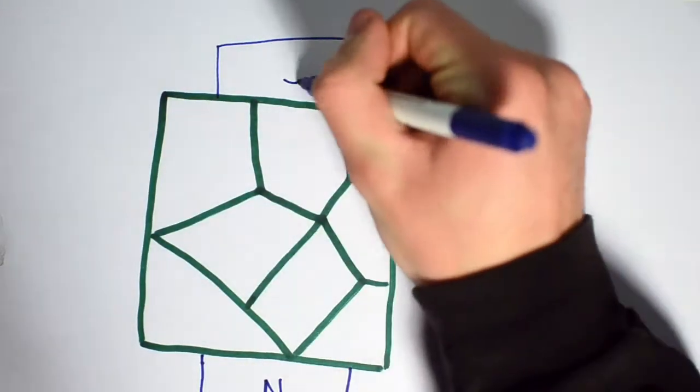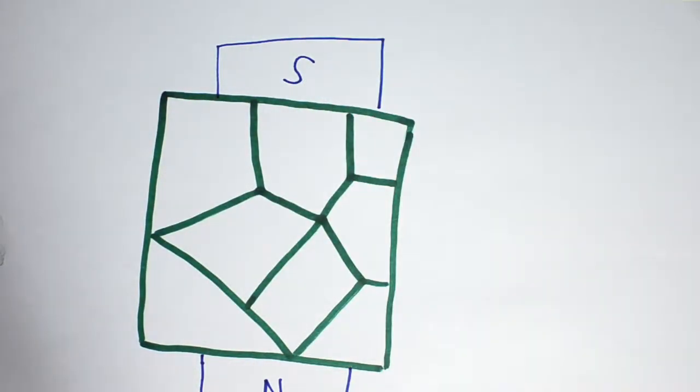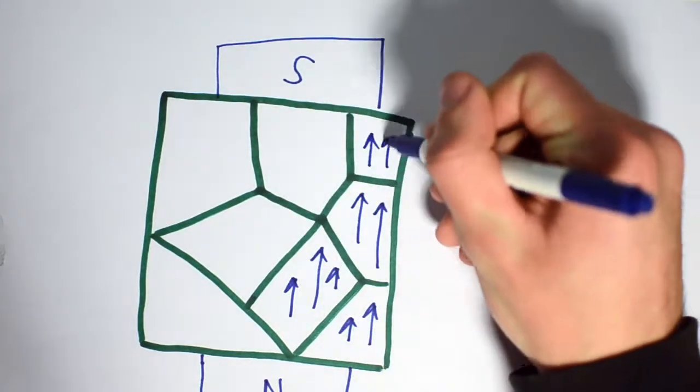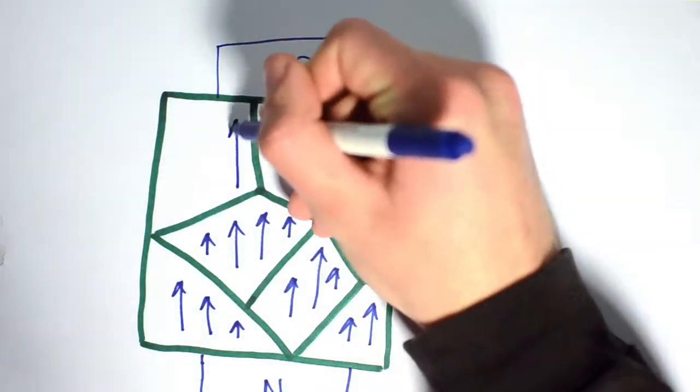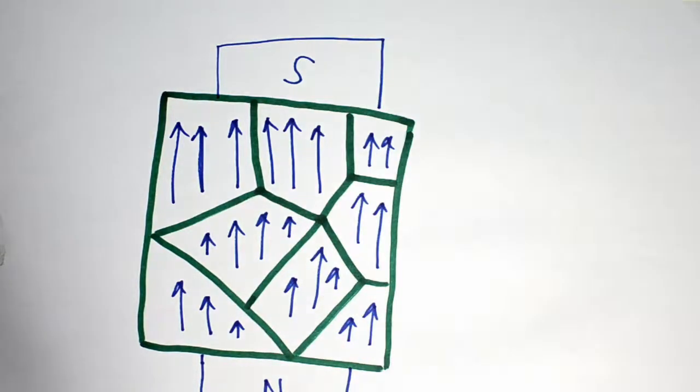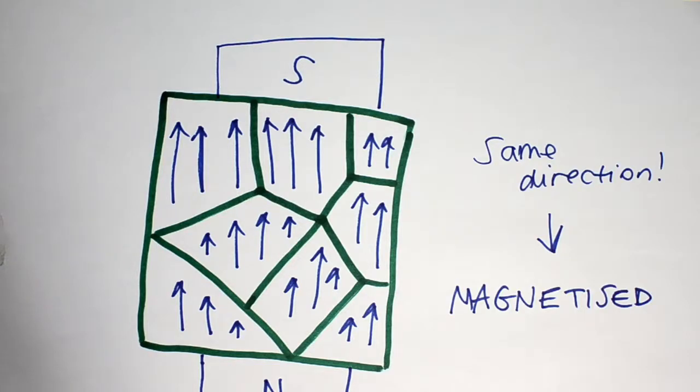So, what happens when a magnetising field is applied to a ferromagnetic material? The electrons in the domains align themselves in the same direction as the magnetising field, in a parallel arrangement. As a result, the iron becomes magnetised as the contributions from different domains no longer cancel out.